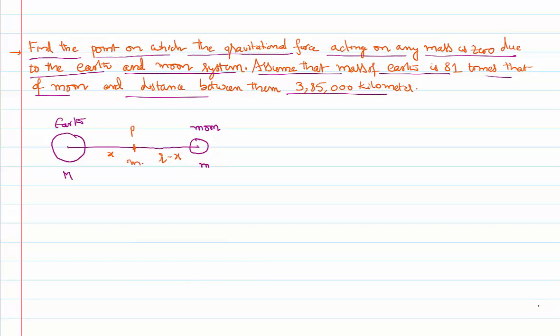On this particle, point P, I have to keep a third mass. On this third mass, let's identify what kind of forces are acting. The earth applies a gravitational force of attraction on this, that is F1. Moon also applies a gravitational force of attraction because gravitational force is always attraction, F2. These two are already in opposite directions. If they are equal in magnitude both of them will cancel each other.